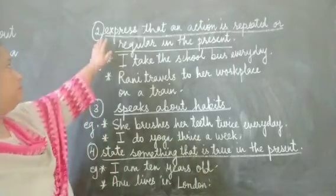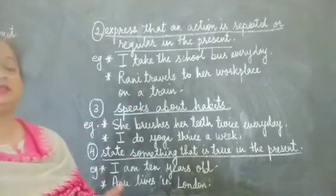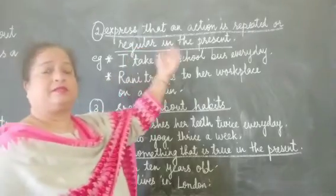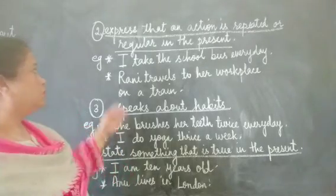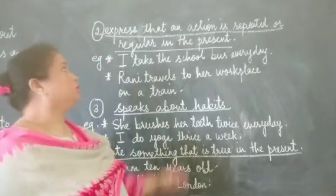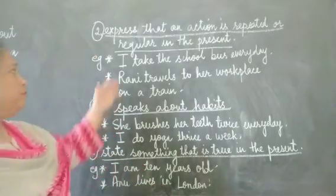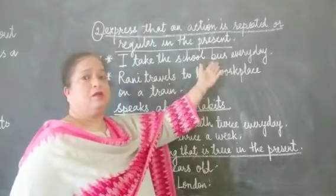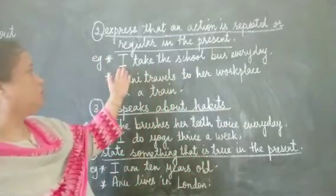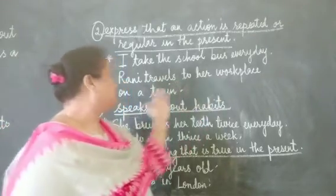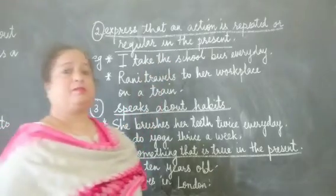The next use of simple present tense in our sentences is that it expresses an action that is repeated — done many times, several times, or regularly in the present. Things that we regularly do also come under the simple present tense rule. For example, 'I take the school bus every day' — this is an action repeated every day. Another example: 'Rani travels to her workplace on a train' — also a regularly repeated action.